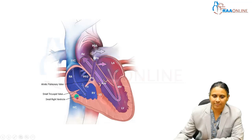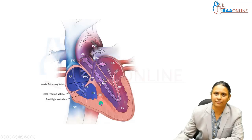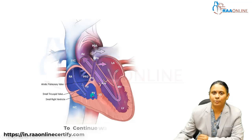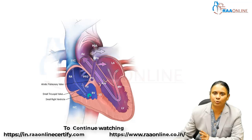In some extreme cases, the RV can be wall-to-wall, meaning there is virtually no RV cavity at all. The muscular trabecular portion is hypertrophied, compressing the RV cavity. The greater the hypertrophy, the greater the compression of the cavity, and the more likely the baby will require a single ventricle repair rather than a dual ventricle biventricular functional repair.